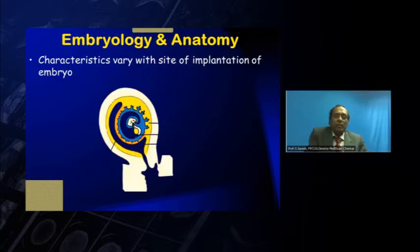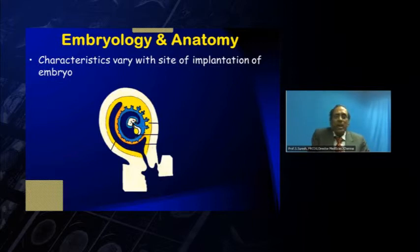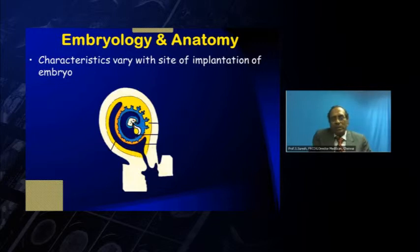Now let's look at the embryology and anatomy. The characteristics of the placenta vary with the site of implantation of the embryo. If the embryo implants very low, or if there is a failure of implantation or a failure of pregnancy very early, some changes occur and we are just barely able to identify the chorionic ring as a bright-white structure.